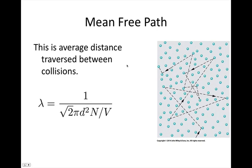Now we'll look at a couple of things related to gases before moving on to specific and latent heats. First, the mean free path: the average distance a molecule travels between collisions. Lambda equals 1 over the square root of 2, times pi d squared, where d is the diameter of the molecules, n is the number of molecules, and v is the volume of the gas.